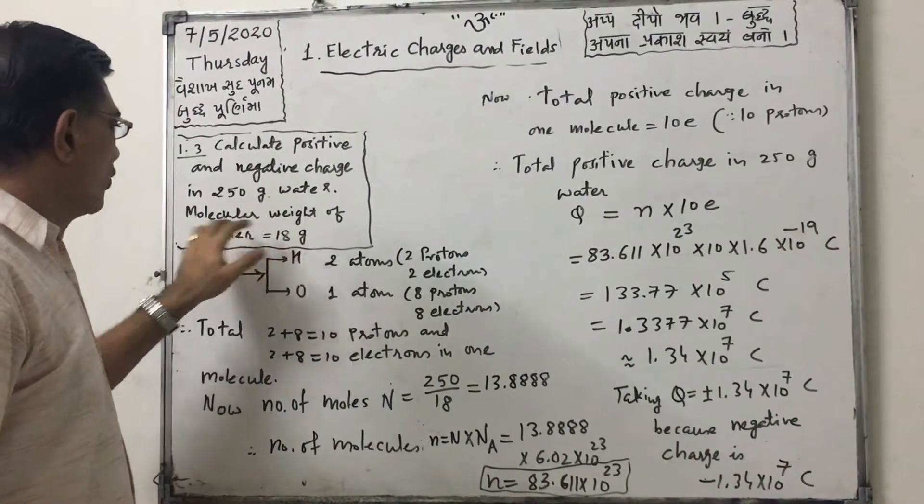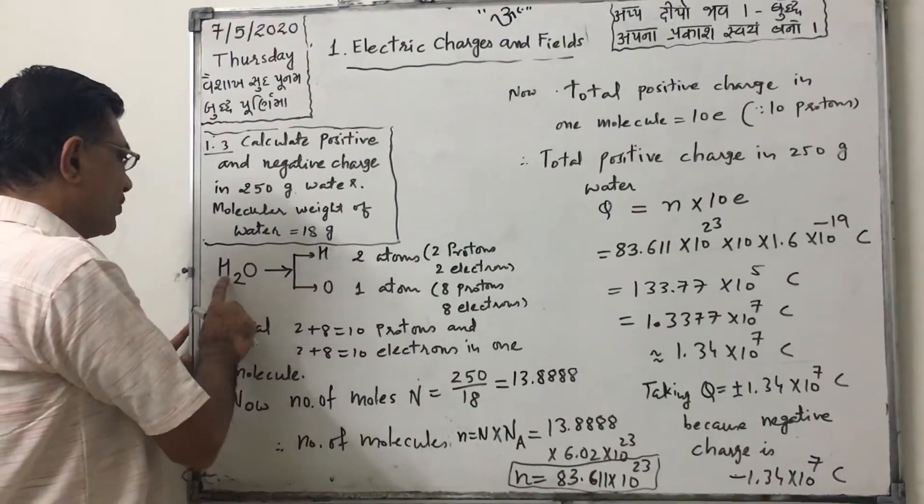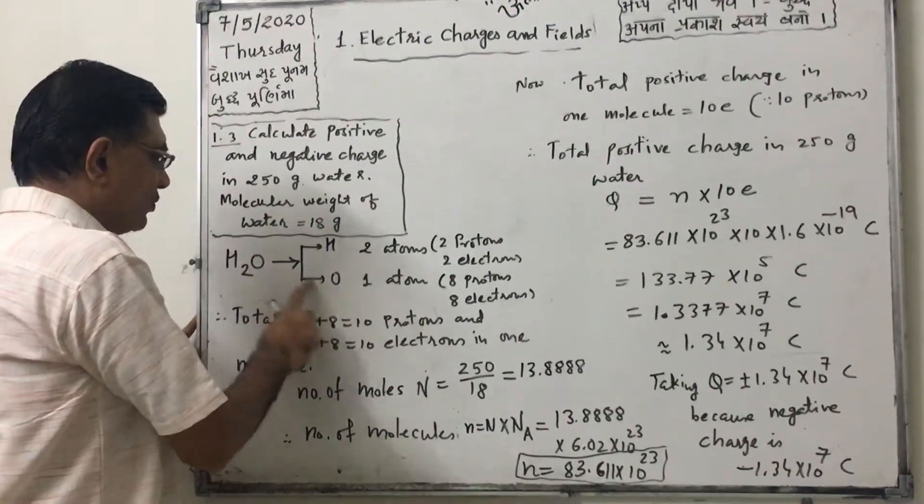Molecular weight of water is given as 18 gram. Now first of all, you know that water is H2O. So H 2 atoms, O 1 atom.